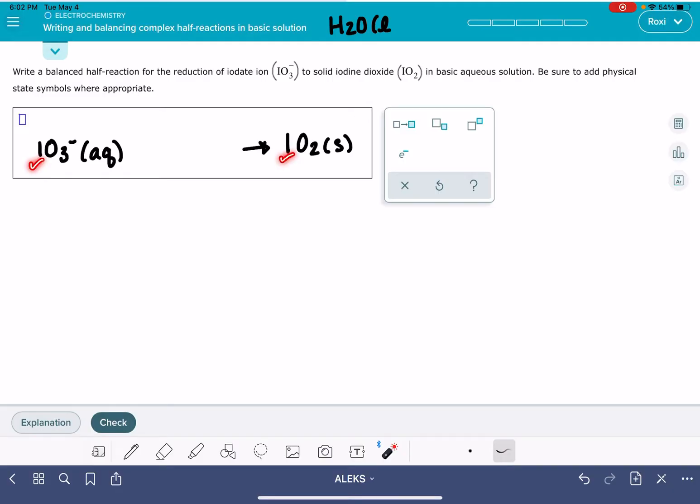First, we want to balance the iodines. They are already balanced. Next, we'll balance the oxygen. We have three oxygens on the left side, only two on the right. We're going to balance the oxygens by adding water. Remember that water is always liquid.